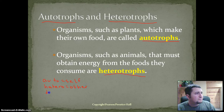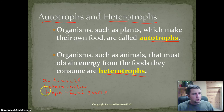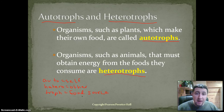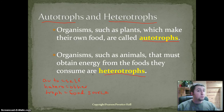And the word 'troph' means food source. So you put those words together and you get autotroph — self, food source. Now it makes sense. Plants are able to make their own food, as opposed to us — heterotrophs. Heterotrophs means other food source. We need another food source. We can't make our own food; we need to find it from somewhere else.